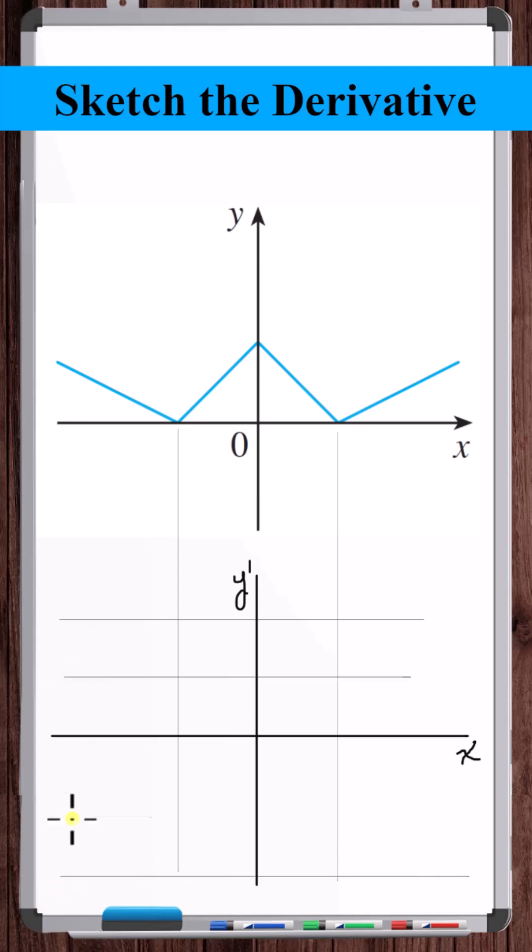So what we're going to do is put open circles at these kink points because there is no value of the derivative at the kink points. The derivative doesn't exist at the kink points. And that's the graph of the derivative.